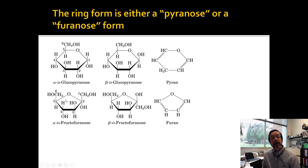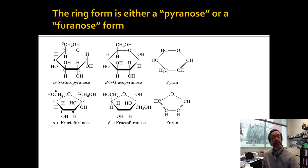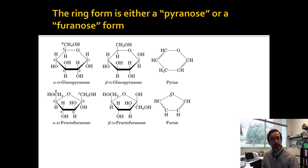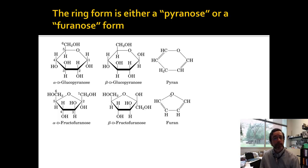Fructose has the same thing happen with its ketone, but its ketone is on C2. So its C5 will react with its C2 to form a hemiketal, and that looks like a pentagon — which looks like a furan molecule — so we call that the furanose form. Technically glucose can form a furanose form, but it's not very stable. I should note that glucose can form a furanose form, but it would be unstable and would have two carbons sticking out as the periscope.